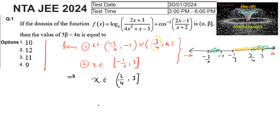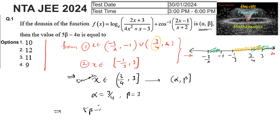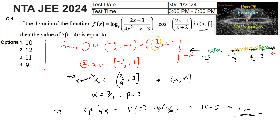The domain of the function is (alpha, beta] where alpha is excluded and beta is included. So alpha = 3/4 and beta = 3. Therefore, 5β - 4α = 5(3) - 4(3/4) = 15 - 3 = 12. The answer is 12, which is option 2.